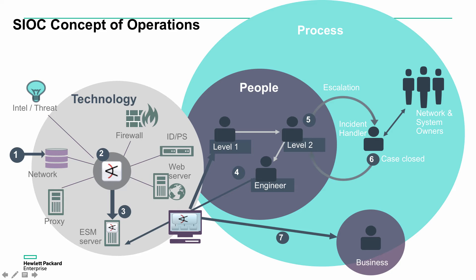Let's assume we're seeing some network activity, some firewall data, some data that's been correlated on ESM specifically. That then is interacted with by the level one analyst - they're doing that initial triage in three to five minutes. They're then handing that to the level two analysts, who in this particular case identify there's a real case that needs to be handled by an incident handler, who can then run with that and process it accordingly. This incident handler is probably not using the ArcSight system - they're probably using their own incident management system to ensure they're tracking and tracing everything.